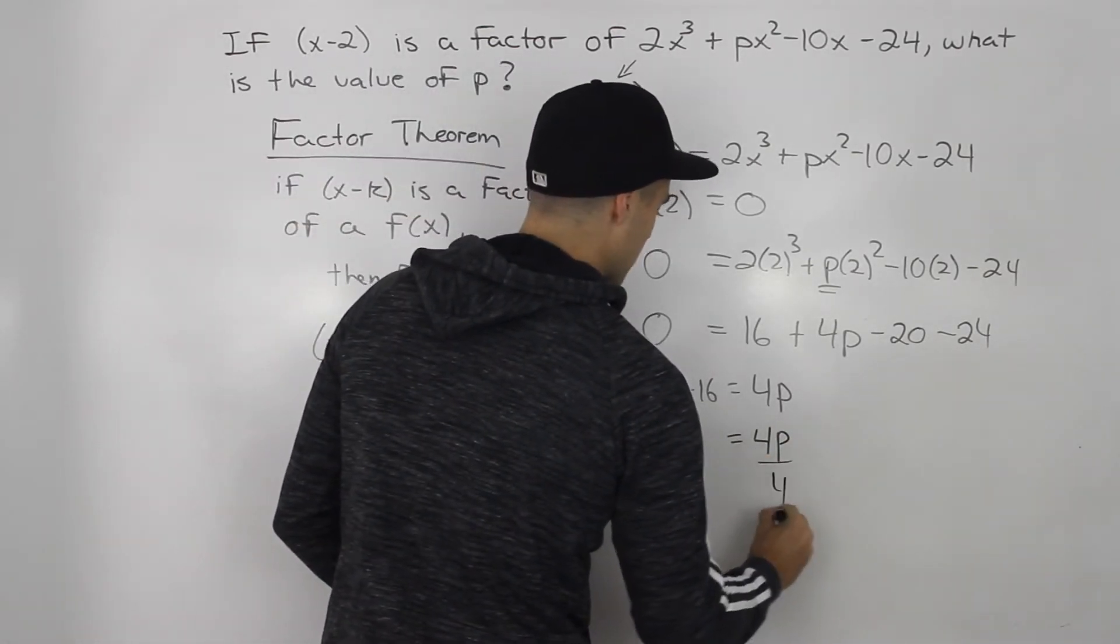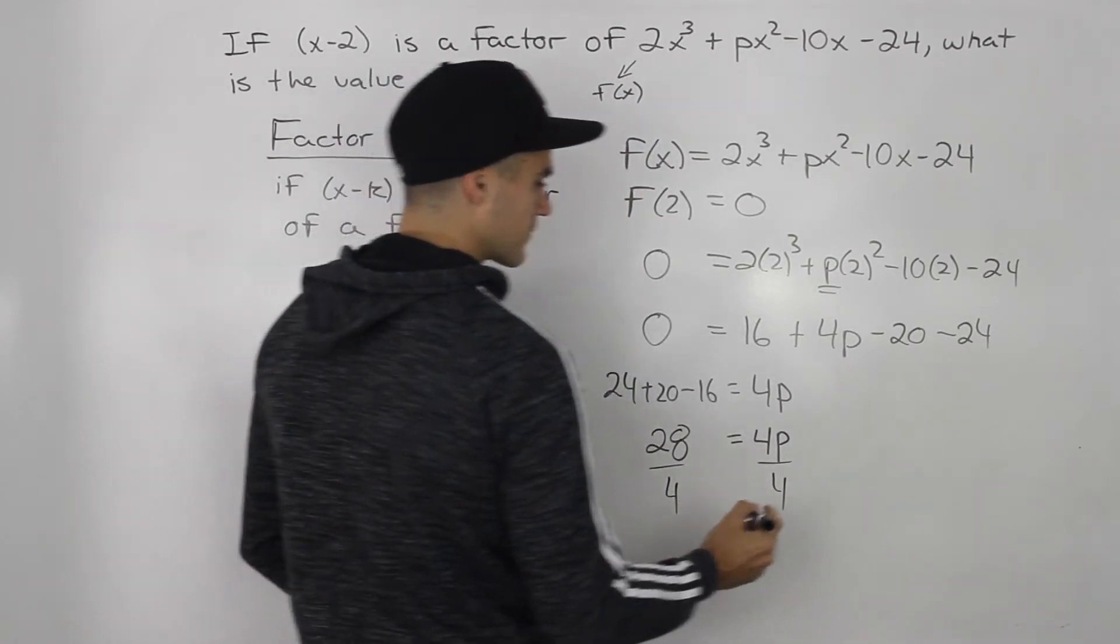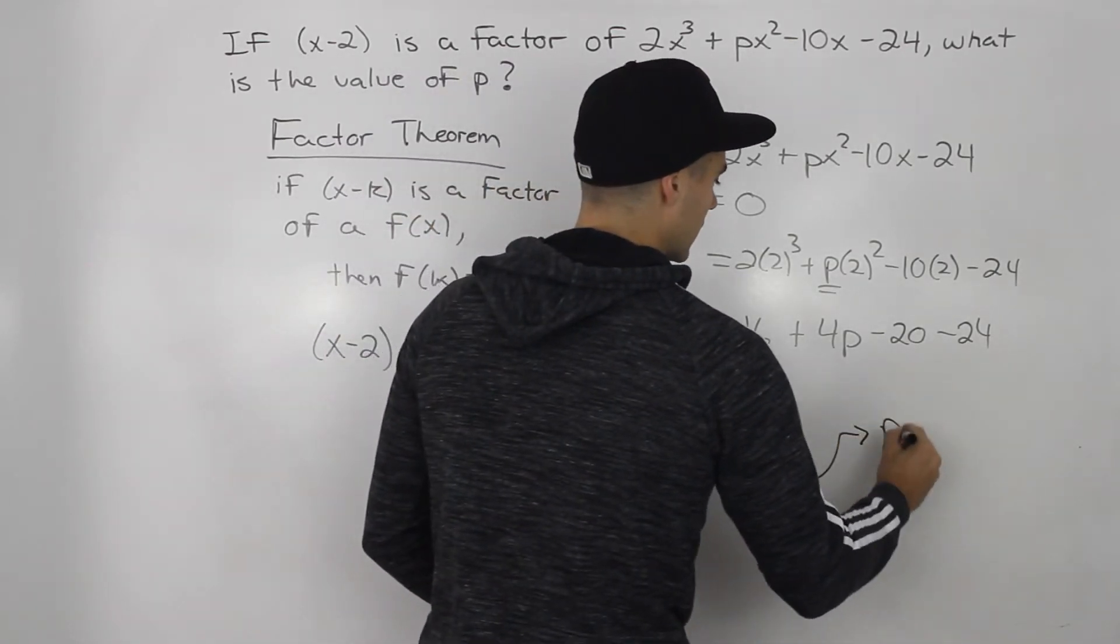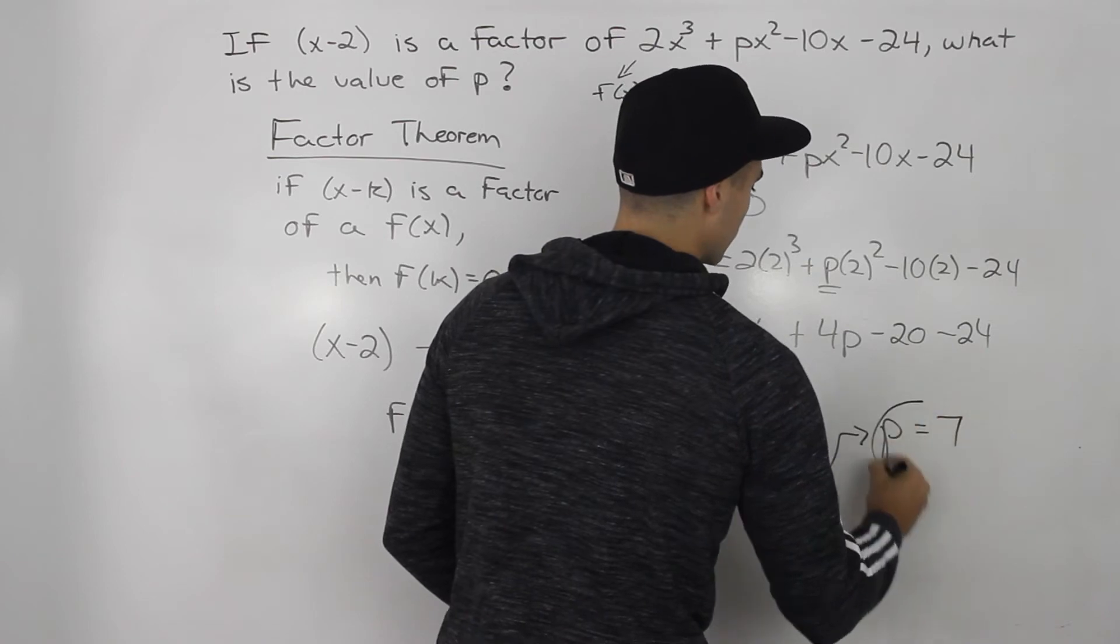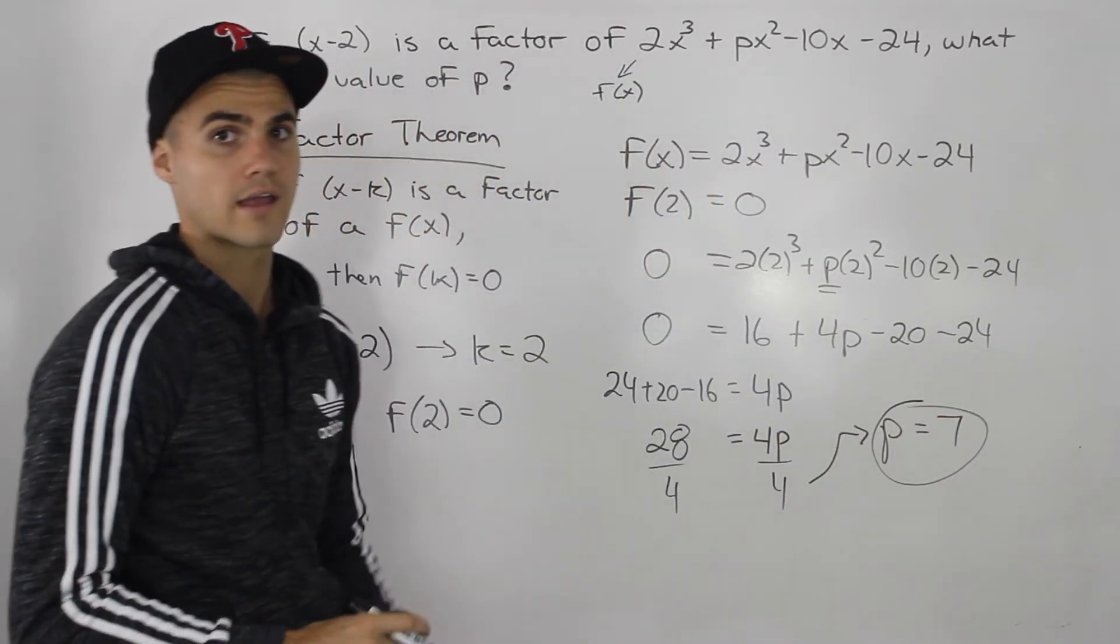So to isolate for that p, we divide both sides by 4. And when we do that, we end up getting a p value of 7. And that is our final answer.